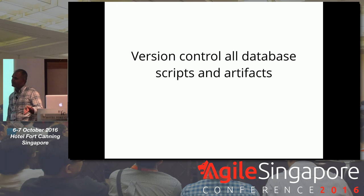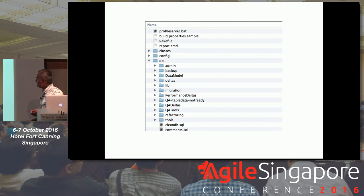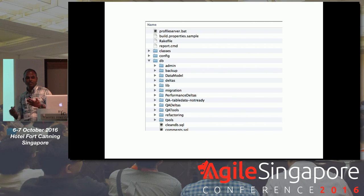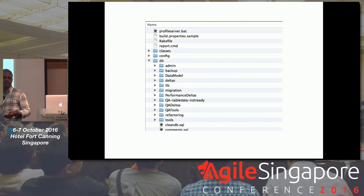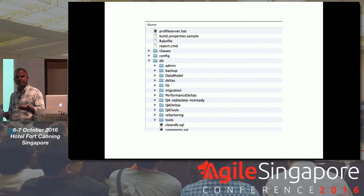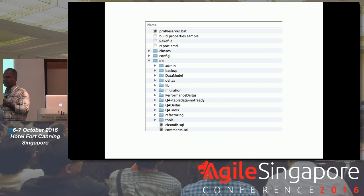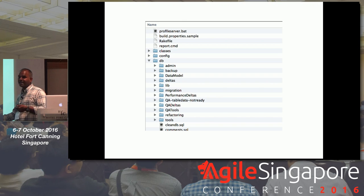You can also version control everything on the database side, just like devs version control everything. You can put literally everything — deltas, the data model, even ERwin diagrams — in version control. Once DBAs and devs start putting all database-related stuff in version control, visibility increases, and you get a nice audit of who changed what, at what time, for what reason. When you check in as a developer, you reference the requirement that forced that change, when and by whom it was checked in — that context is not generally available on the database side.